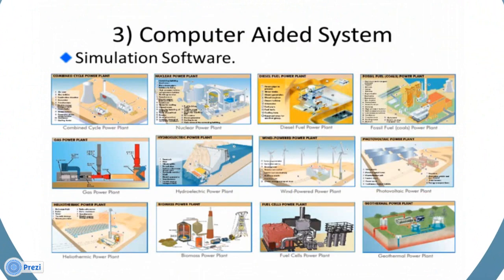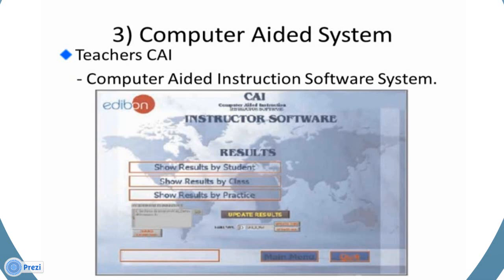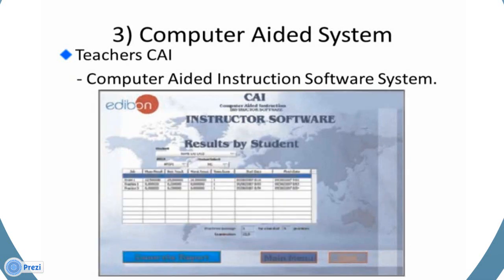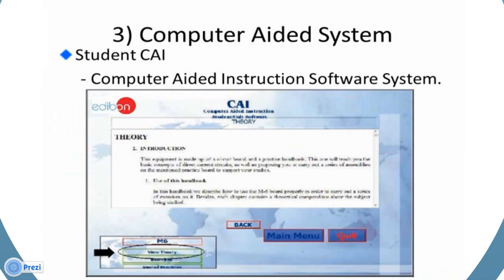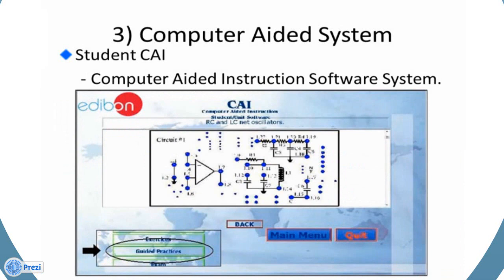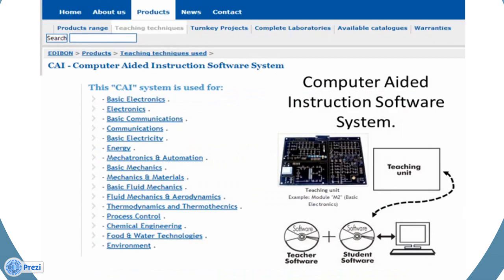Pure simulation software allows you to simulate on the computer the real process, but all the data handled is theoretical. Edibon only uses this in complex, high-tech electronics. Teacher CAI allows teachers to organize and control the students — they can view the student's progress, detect difficulties, and assess them with exams. The student CAI provides a detailed explanation of the theory and practice exercises in which the computer guides the student. These two computer-aided instruction software systems are available for basic electronics, digital electronics, basic electrical concepts, electronics applications, and controls.